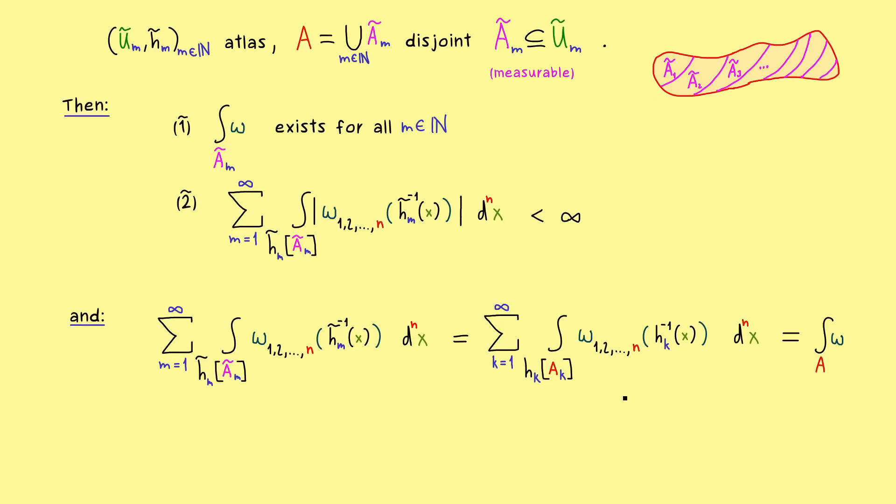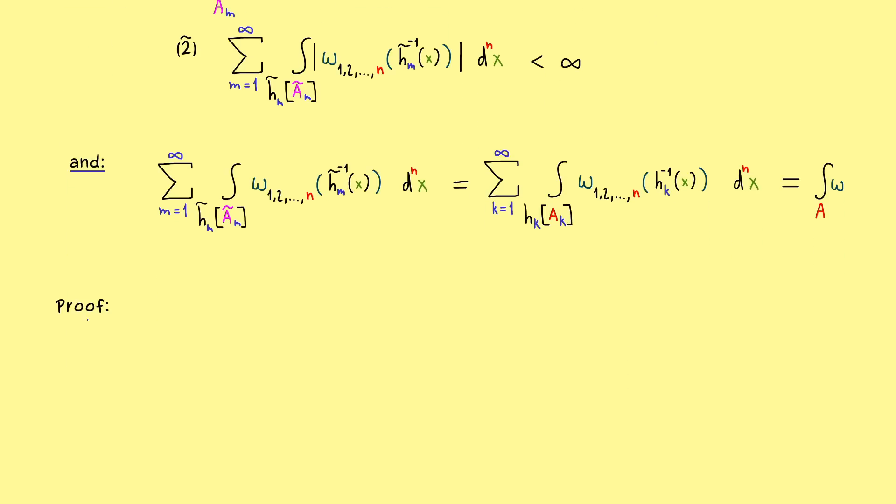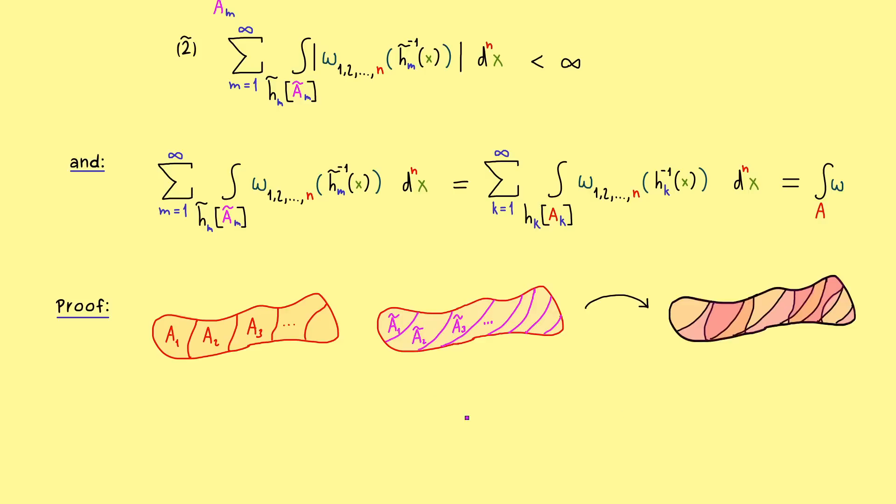Okay, so this was already a lot of work, but the proof is not so complicated here. Simply because we already have the correct picture in mind. Namely, we can just combine both decompositions into a third one. If I put the one over the other, we get out a decomposition with even smaller sets. Indeed, these are all the intersections. For example, this set here is A1 intersected with A2 tilde. Indeed, we still have a countable decomposition with measurable sets. And now you should see the advantage of this new decomposition, because we can calculate this integral with respect to the one atlas and with respect to the other one. This means we can put this intersection into H tilde M and into Hk.